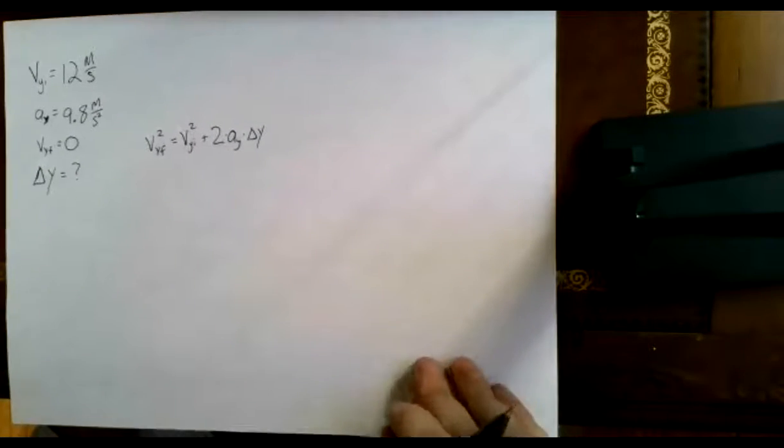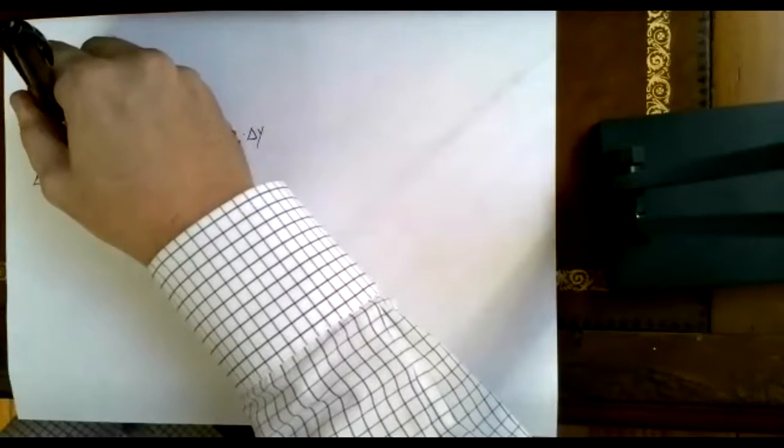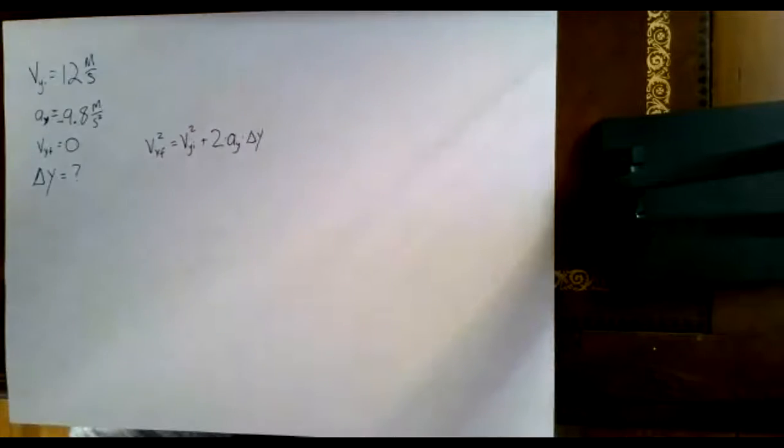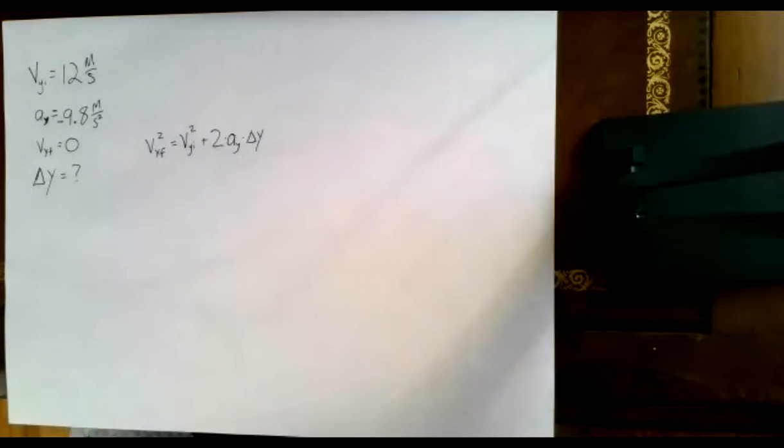So our final velocity squared equals initial velocity squared plus two times acceleration times our displacement. All right. One thing I want to make sure, I fix the acceleration, make sure we put negative 9.8, right? Because it's being pulled downwards. Acceleration is always going to be in the downwards direction.